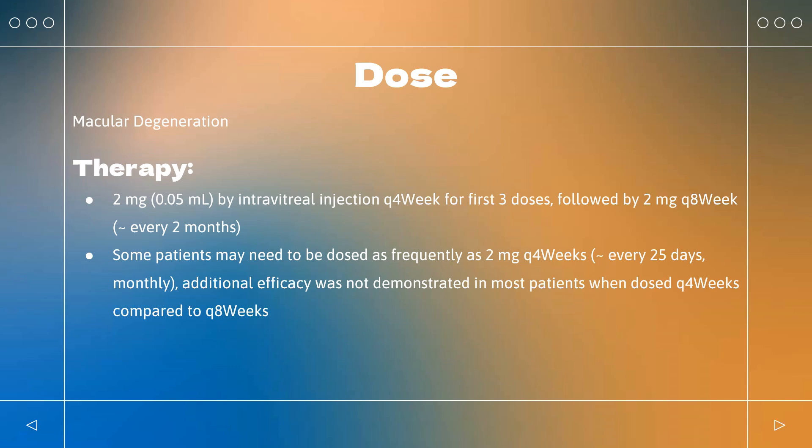Macular Edema. Eylea. Indicated for treatment of macular edema following retinal vein occlusion (RVO), branched or central retinal vein occlusion. 2 mg (0.05 ml) by intravitreal injection every 4 weeks (every 28 days, monthly).